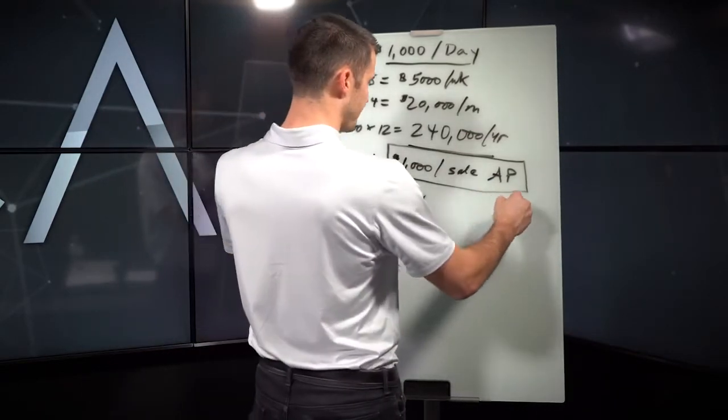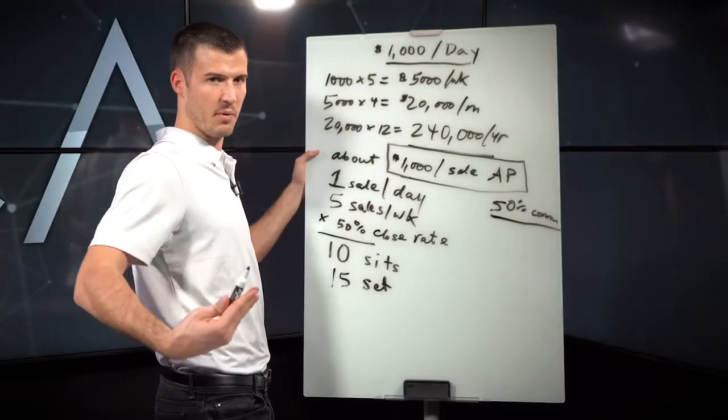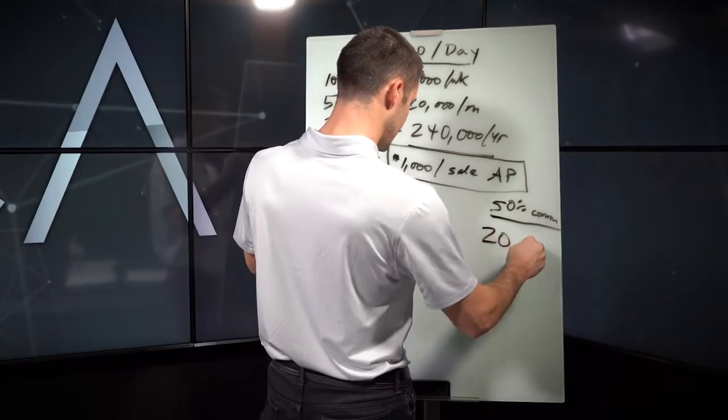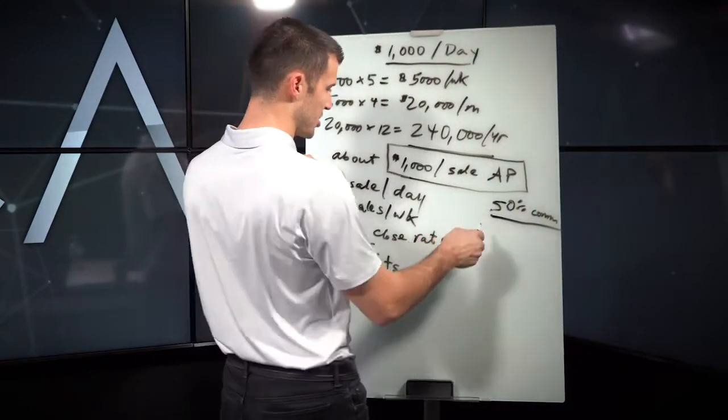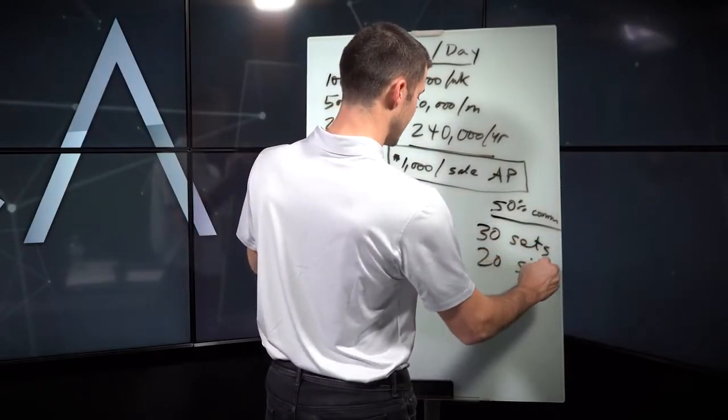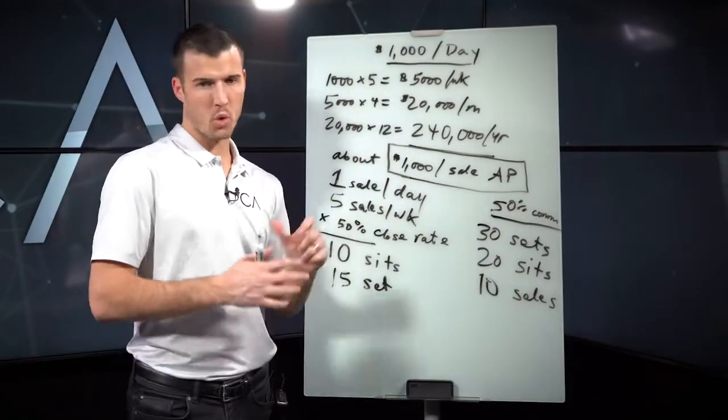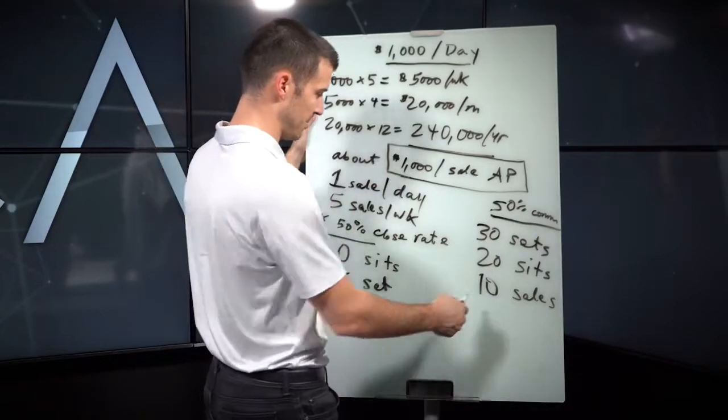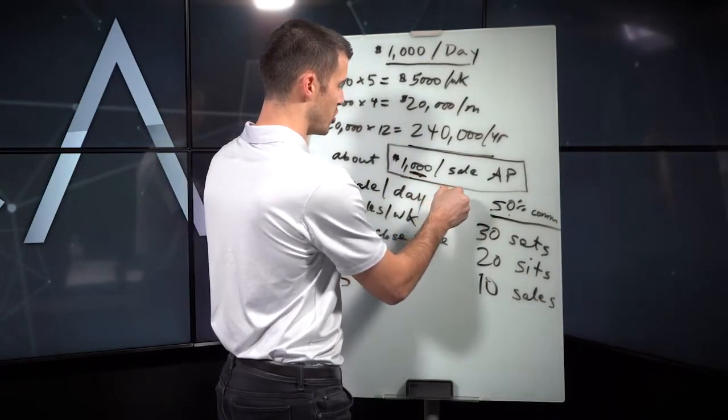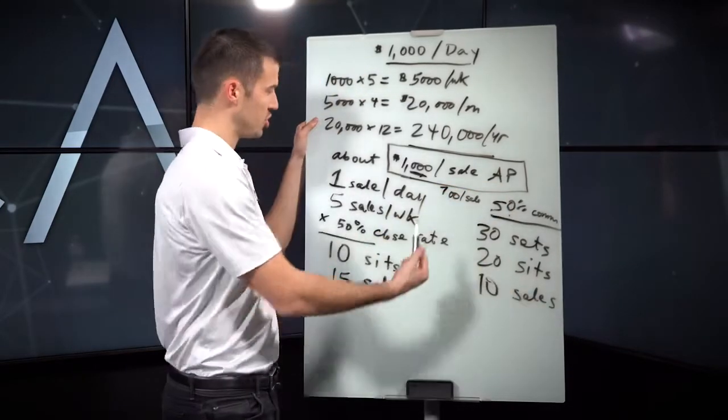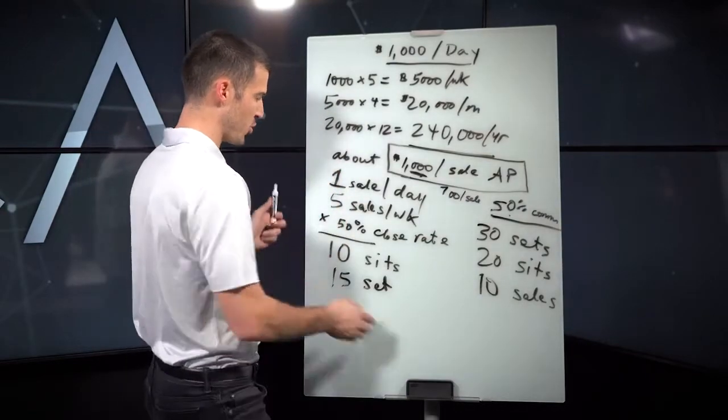Let's just say that two thirds of the appointments that you set end up sitting down with you. So that's 15 set. This already feels a little off for most agents simply because you have to do this in premium to even think about it. Now if you're on a 50% commission level, then you need to double this. If you're on a 50% commission level, I was on a 35 to 50% commission level back in the day when I first started selling life insurance, then you would need 20 sits because you would need two times as many sales. You would need 10 sales.